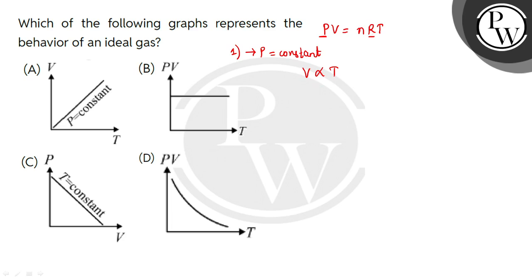At constant pressure, the graph V versus T will be a straight line.